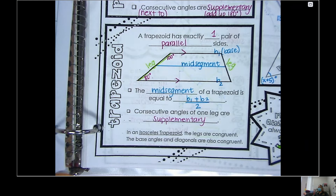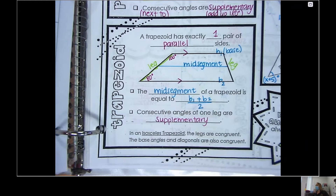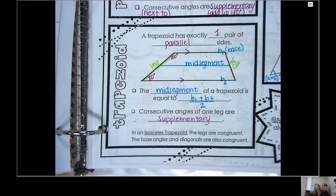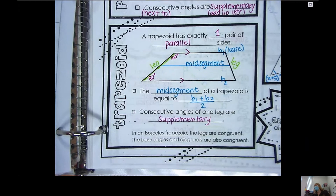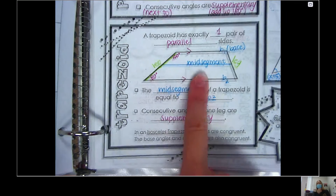If I have the number two and the number four on a number line, what's two plus four? Six. And what's six divided by two? Three. In relation to two and four, where's three? That's right in the middle. So we are just finding the average. That's going to give me the mid segment.